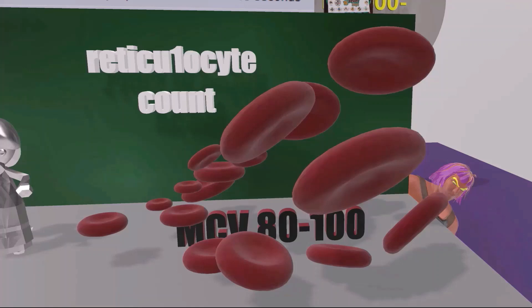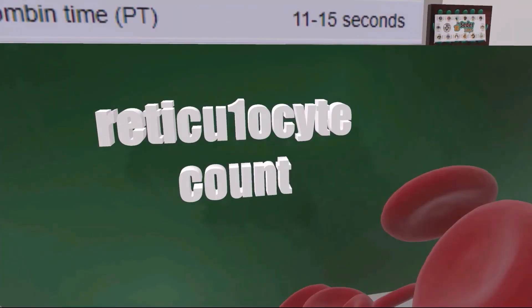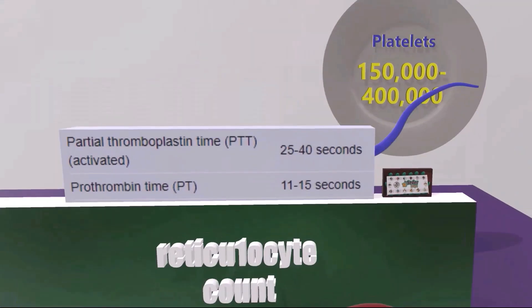Now we see the letters over here, reticulocyte count on the wall with a 1 instead of a T. This reminds us that the reticulocyte count should be about 1%, between 0.5% and 1.5%, with 1 being the average. So the reticulocyte should be about 1%.